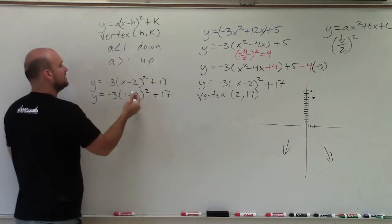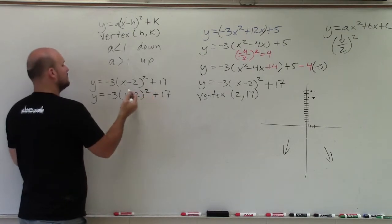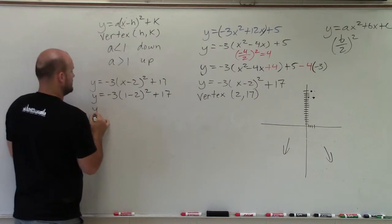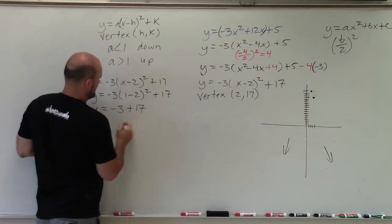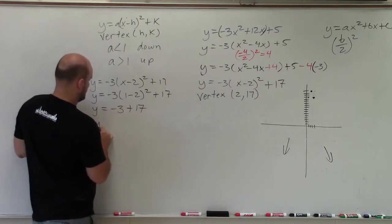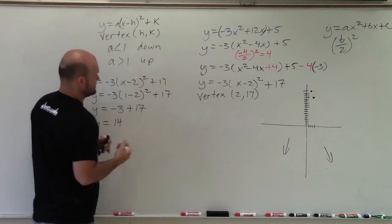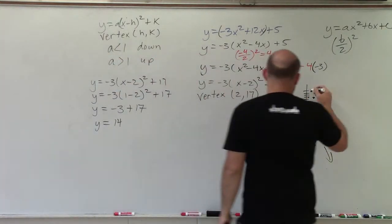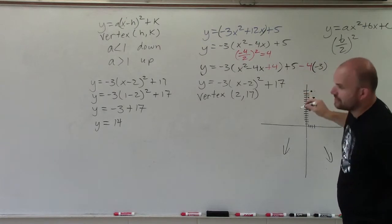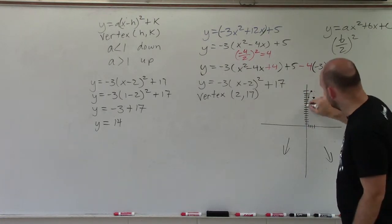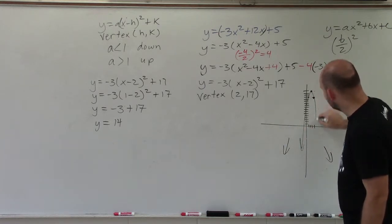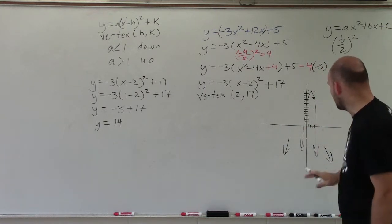Well, 1 minus 2 is negative 1. Negative 1 squared is positive 1. Positive 1 times negative 3 is going to be a negative 3 plus 17, which y equals 14, which is exactly as I stated. It would be down 3 over 14. And then, you can just keep on following that pattern as over 2, down 6, you're going to keep on going. So my graph is going to be very skinny. And it's going to look something like that.